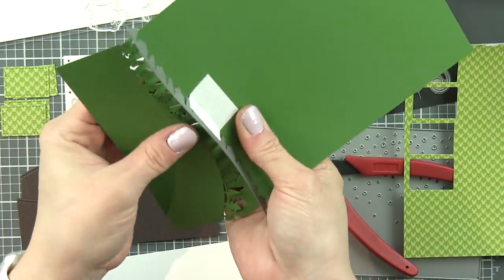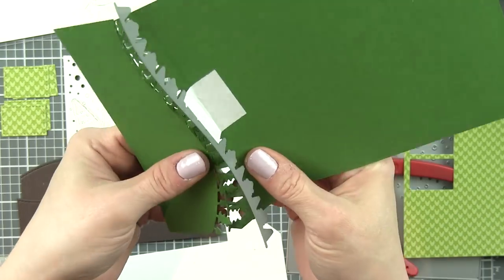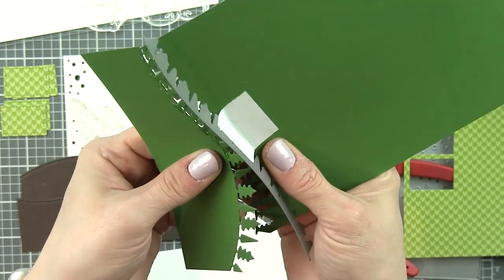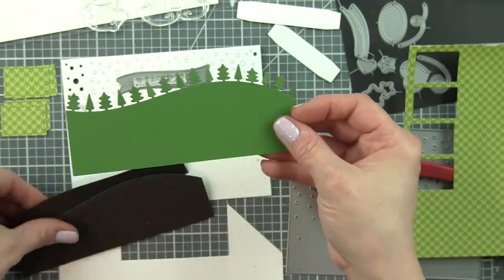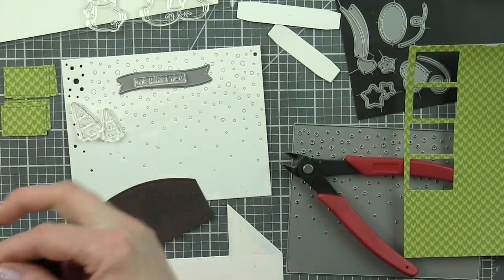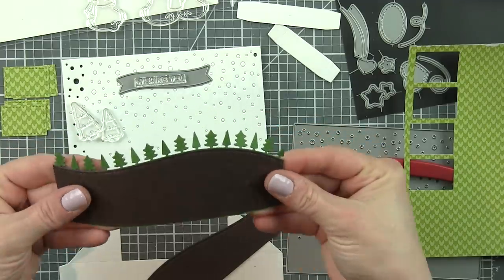So we're going to start with the front of the card. You might see there that I have a panel that looks like snowfall. This is the landscape snowfall die. There is also a portrait, so there are a couple of different options.